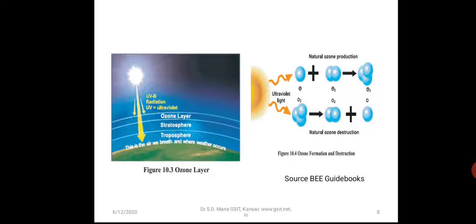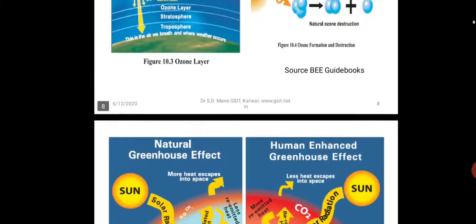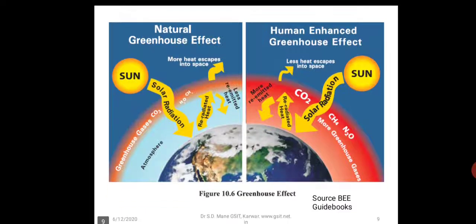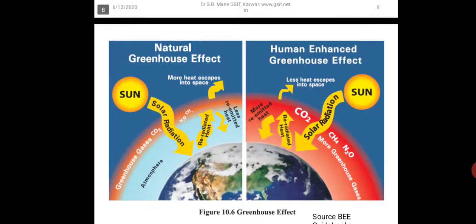Second is ozone layer depletion. Due to COVID, at least one good thing happened — the ozone layer has healed. Ozone is a shield which protects mankind from the harmful ultraviolet rays of the sun, and it gets destroyed by chlorine and other CFCs which are used in refrigerants. Nowadays we are going for ozone-friendly refrigerants. Third is the natural greenhouse effect — the temperature of the earth is rising with disastrous consequences for mankind in the near future.